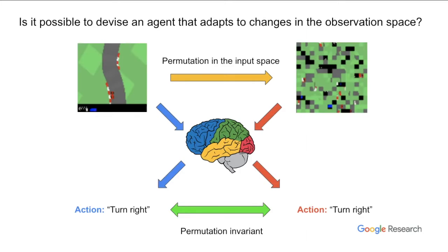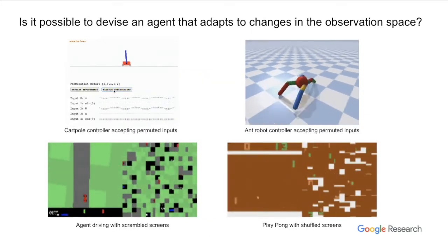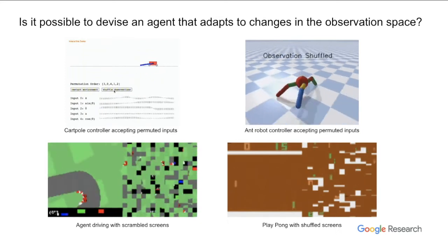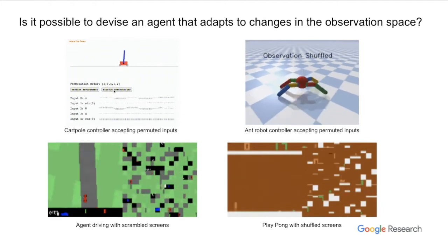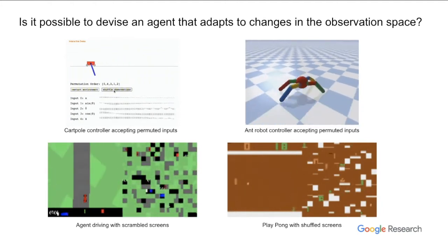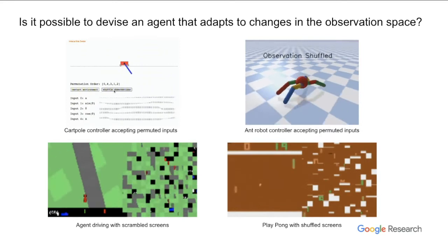To put this goal in a concrete example, it is challenging to play a car racing game if all we can observe is a scrambled screen. Unless the model is retrained, modern deep learning systems are generally unable to adapt to the reordering of inputs either. In this paper, we attempt to solve this problem and devise agents that are permutation invariant. We managed to train such agents on various tasks, and permutation invariance is achieved through a special design in the agents — not by shuffling observations during training.